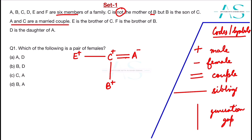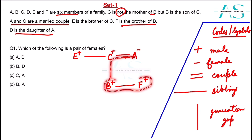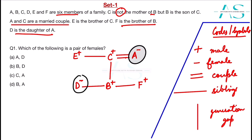F is the brother of B. D is the daughter of A, and also the daughter of C, and is a sibling of B and F. The question asks which among the following is a pair of females only — that would be A and D. Option A seems to be the correct fit.